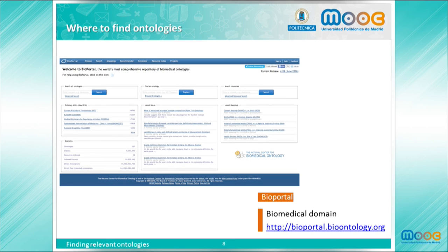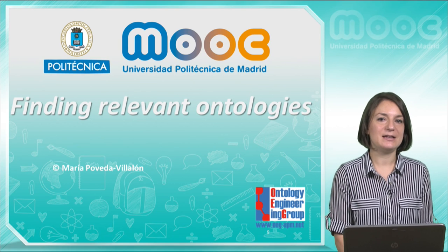Another registry of ontologies specialized in a given domain is BioPortal, which contains ontologies in the biomedical domain. This registry gathers more than 500 ontologies describing concepts such as conditions, genes or anatomy, and allows search and navigation through ontologies. Finally, it is advisable to check the complementary material available in the course.